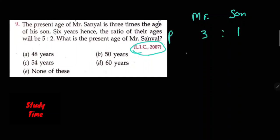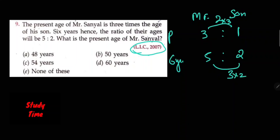The present ratio is three is to one. Six years hence the ratio becomes five is to two. Using the difference between the ratios — the difference of three and two, and two into three — we get the ratio of nine is to three, or ten is to four, and working through to find the key value.